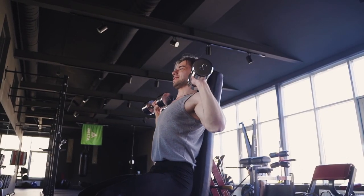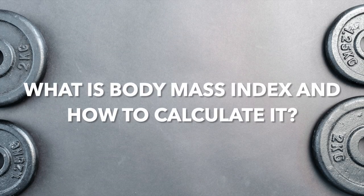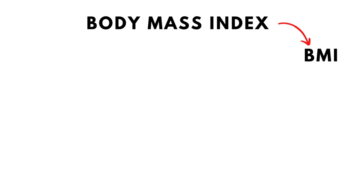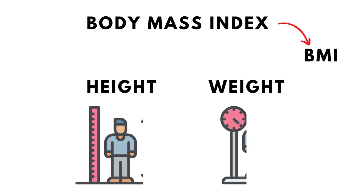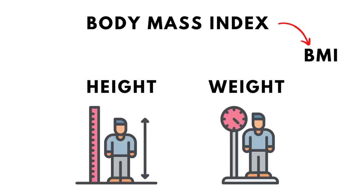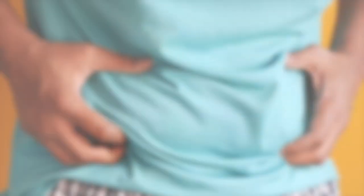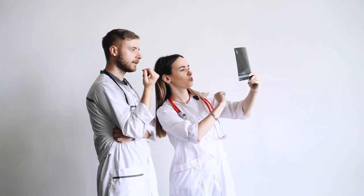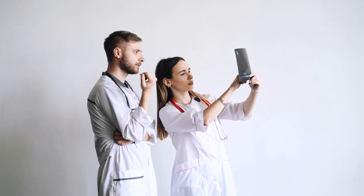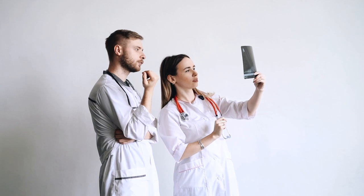Let's dive into all the details. What is body mass index and how to calculate it? Body mass index, or BMI for short, is a value that derives from the height and weight of a person. It is a medical tool that estimates how much body fat you have, which can help assess a person's health status or risks.